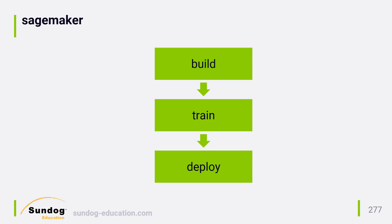It's pretty easy to start using SageMaker. You just push a button in the AWS console to start a new notebook instance, and a hosted Jupyter Notebook environment will be spun up for you, with access to all of SageMaker's built-in algorithms. You can spin up environments that include most any deep learning framework you want to use, such as TensorFlow or Apache's MXNet. You use that notebook to build your model — in our case, a recommender system algorithm.